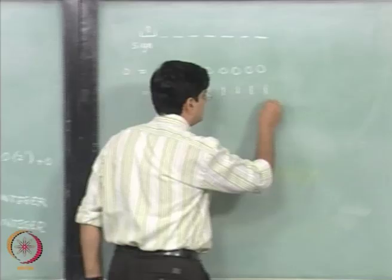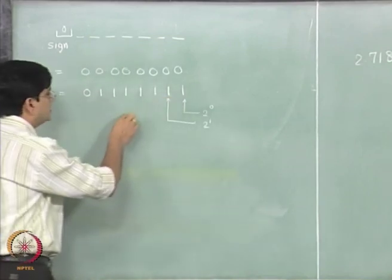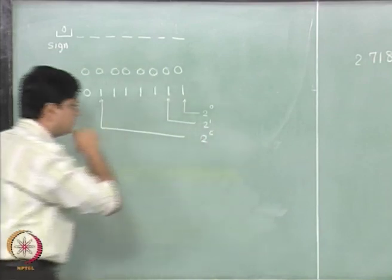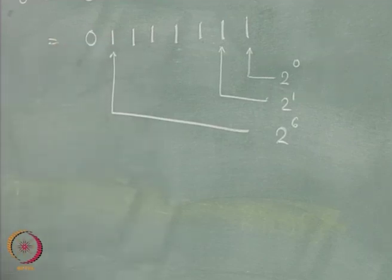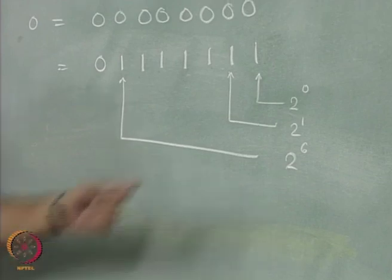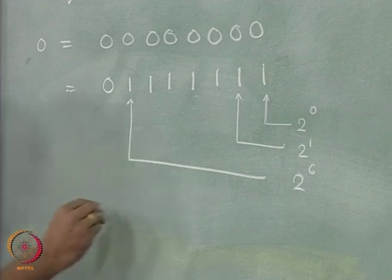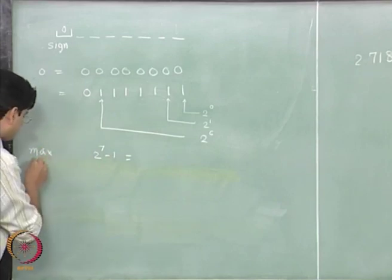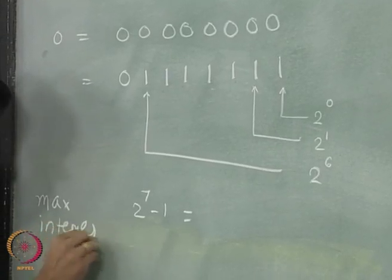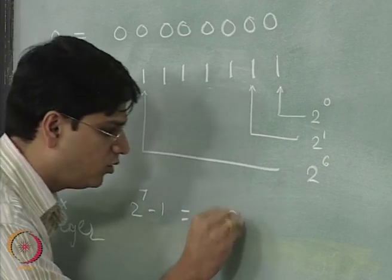When all the remaining bits are 1, this represents 2 to the power 0 plus 2 to the power 1 and so on up to 2 to the power 6. So the maximum number this is going to represent is 2 to the power 0 plus 2 to the power 1 plus 2 to the power 2 up to 2 to the power 6, which we know can be written as 2 to the power 7 minus 1. The maximum integer that can be represented using this notation is 2 to the power 7 minus 1, which turns out to be 127.